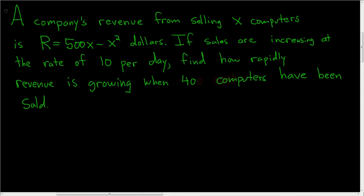A company's revenue from selling X computers is given by the following formula: R equals 500X minus X squared dollars. We're told that sales are increasing at a rate of 10 per day, and we want to find how rapidly revenue is growing when 40 computers have been sold.